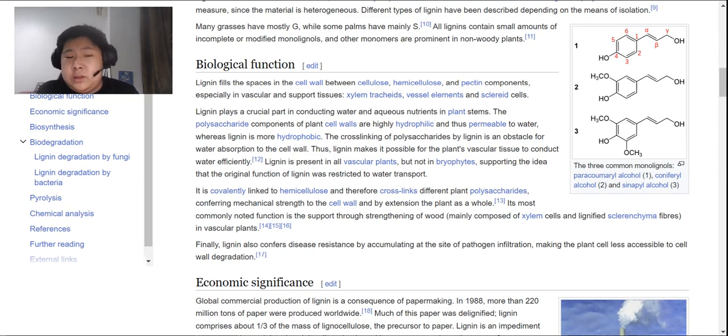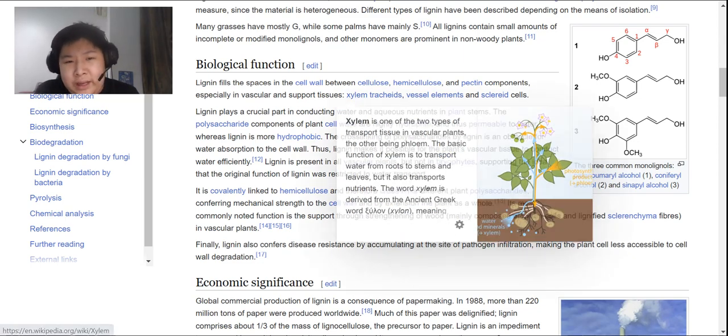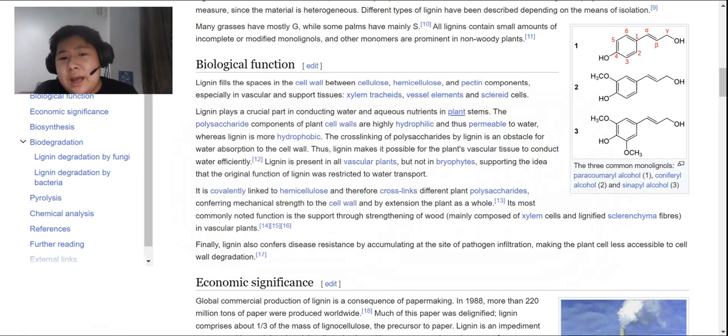Biological function, I think this is what I need. Lignin fills the spaces in cell wall between cellulose, hemicellulose, and pectin components. Especially in vascular and support tissues. Xylem, tracheids, vessel elements, and sclereid cells. I do know that, if I'm not wrong, if I remember correctly, all I remember from lignin is that when it dies, okay, when it's alive, it forms a sieve plate inside the phloem, which allows sugar to be transported.